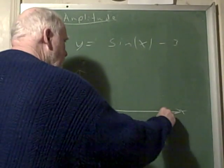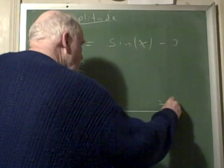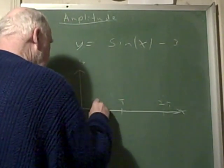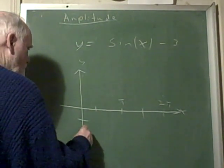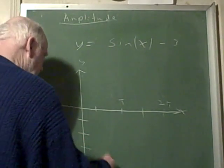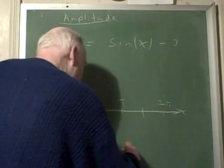We're going to go out to 2 pi as usual, pi here, and then you divide it up into four parts like that. But this time it's going to be lowered down 1, 2, and 3.